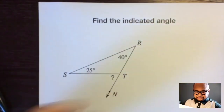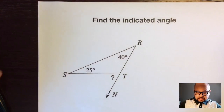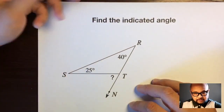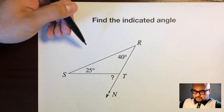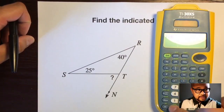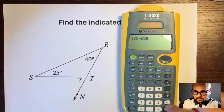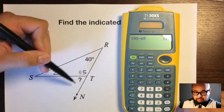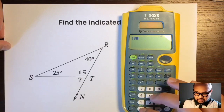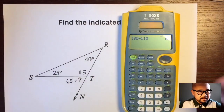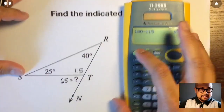Let me show you a couple of examples. Here is example number one. Without the exterior angles theorem, you would have added 40 plus 25 to get 65, then subtracted that from 180 degrees to get 115. Then you would have noticed that this angle and this angle are supplementary, so you'd subtract 180 minus 115 and get 65. But wait — that's an extra step.